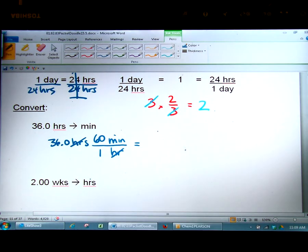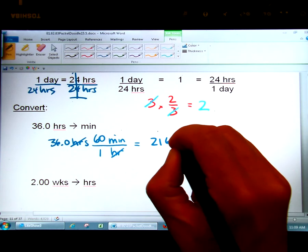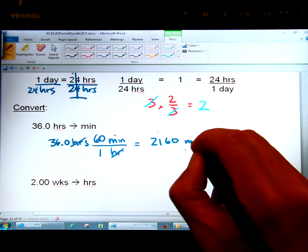So you simply take 36 times 60. On your calculator you'll find that it is 2160. And the unit is now going to be minutes.